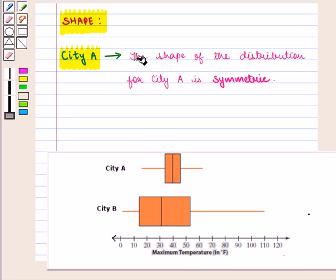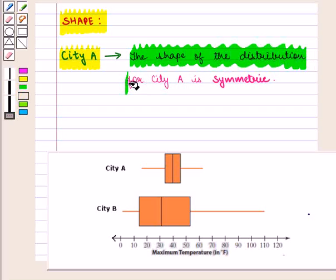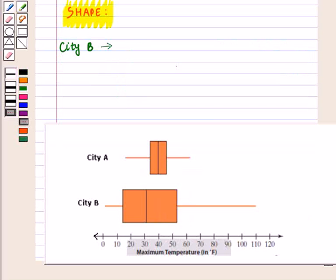So we say that the shape of the distribution for city A is symmetric and for city B the right whisker is longer than the left whisker.